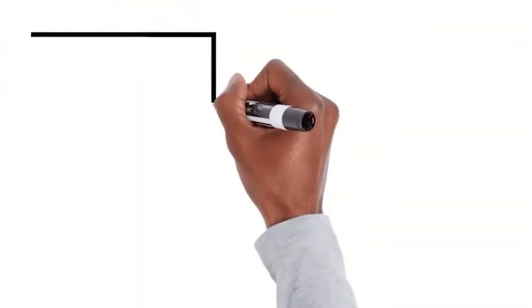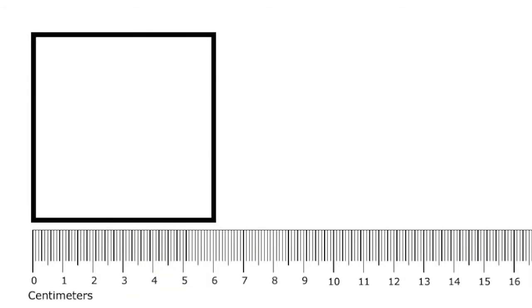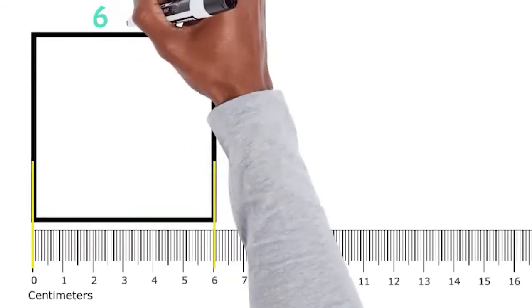Now let's find the perimeter of this square in centimeters. Okay. So line up the edge of the square with zero. And it looks like the square has a side length of six centimeters. Great.